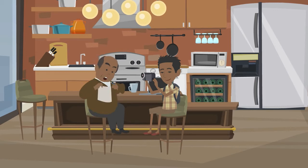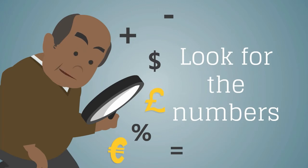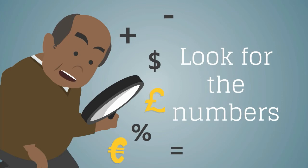Let me give you five tips on using statistics effectively for your presentation. Tip 1: Look for the numbers. Research for statistics that support the information you wish to pass across. For example, you can talk about the number of children living with malaria in Nigeria and the rate at which malaria is spreading to more children on a daily basis.